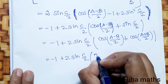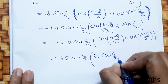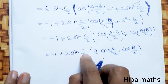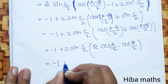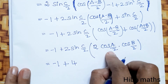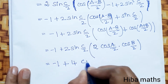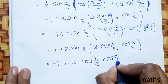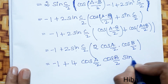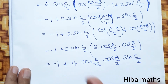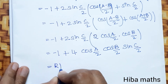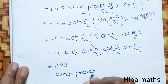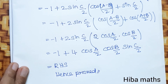Applying 2 times cos(A/2) cos(B/2) for the bracket expression, we get minus 1 plus 4 sin(C/2) cos(A/2) cos(B/2), which is equal to our RHS. Hence proved. Thank you so much for watching.